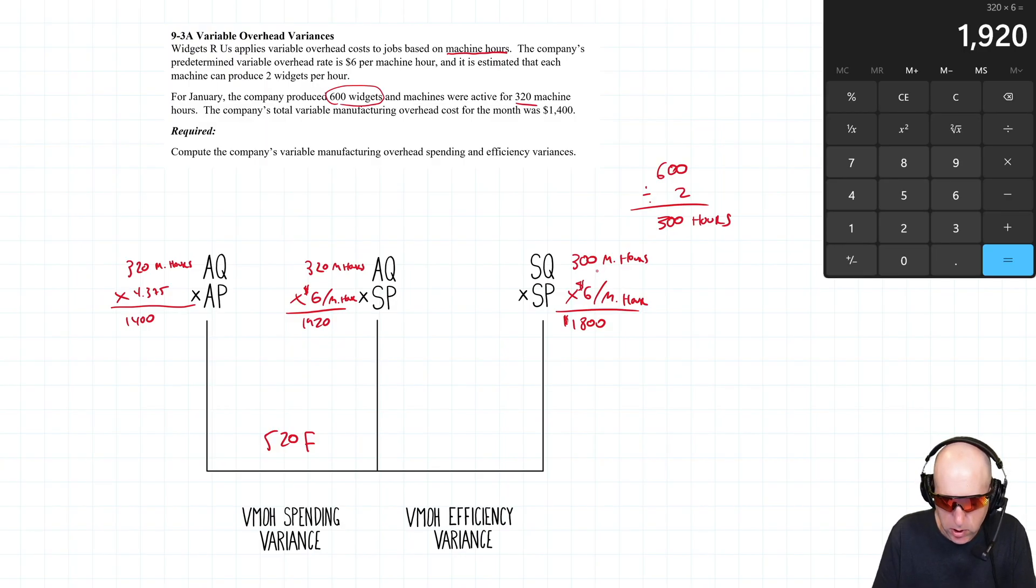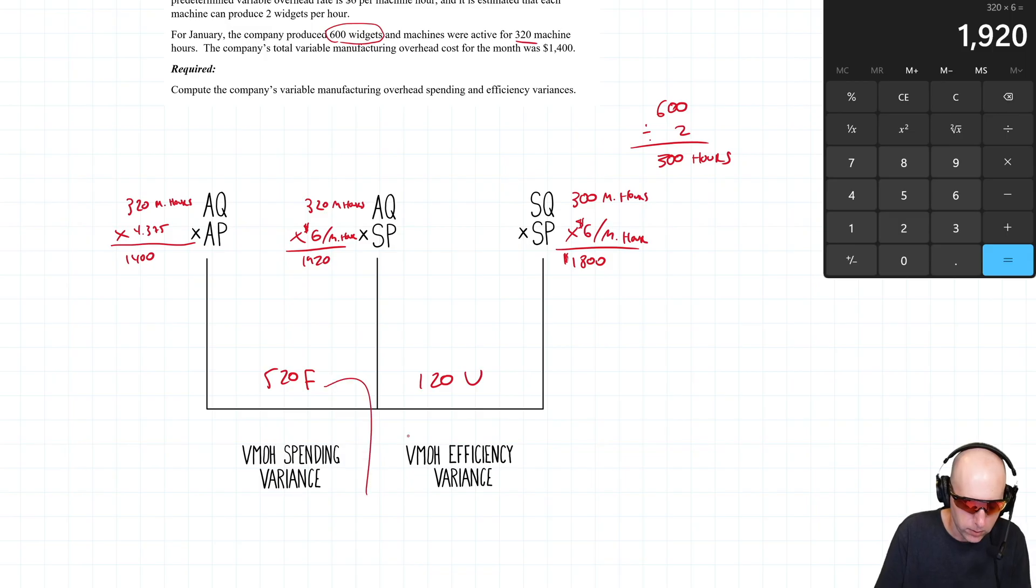I used too much time, right? We were somewhat inefficient with our machine usage, so the difference here is 120. This is unfavorable. Now overall, when we combine the two – 520 favorable, 120 unfavorable – we end up at 400 favorable. You can also compare the left and right prongs of the table.